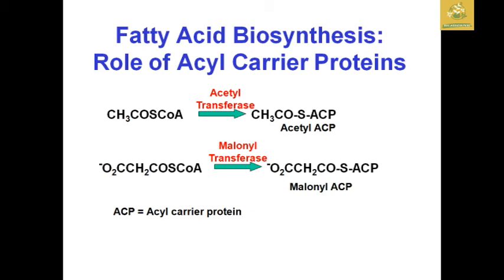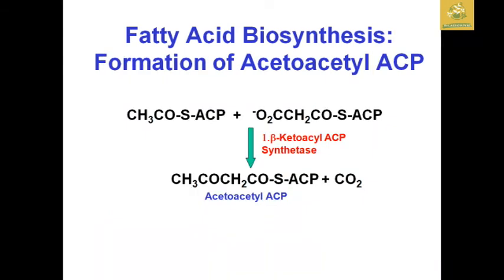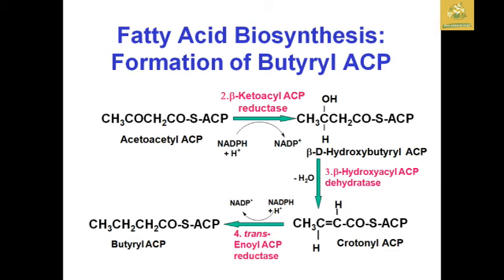Malonyl transacylase acts on malonyl-CoA to form malonyl-ACP. ACP (acyl carrier protein) is used for the transfer of fatty acid groups. The compound from the last reaction is acted upon by beta-ketoacyl-ACP synthase, releasing CO₂ and forming acetyl-ACP. Then, acetyl-acyl-ACP is converted to butyryl-ACP by the sequential action of beta-ketoacyl-ACP reductase, beta-hydroxyacyl-ACP dehydrogenase, and trans-enoyl-ACP reductase.